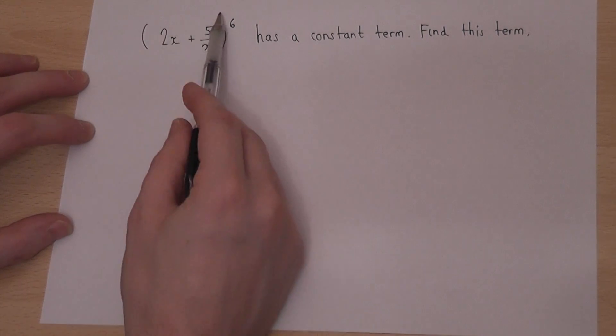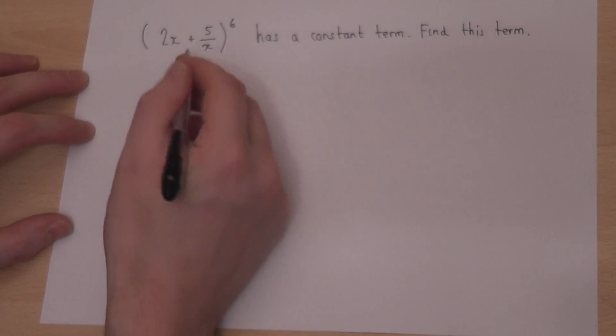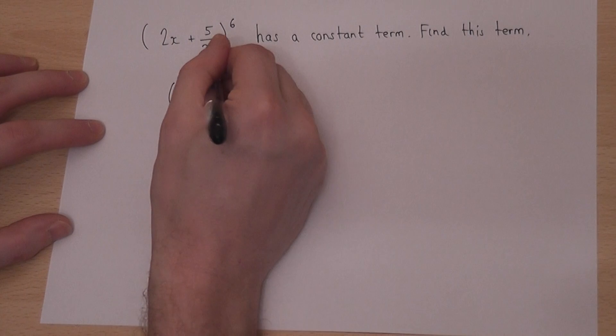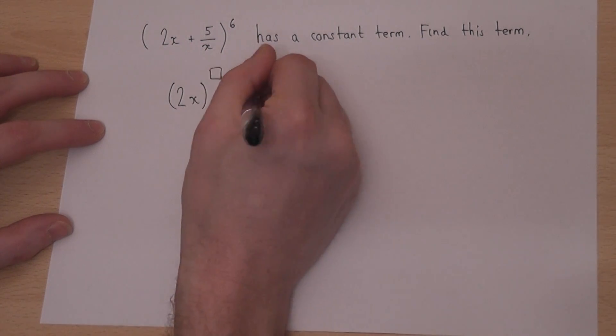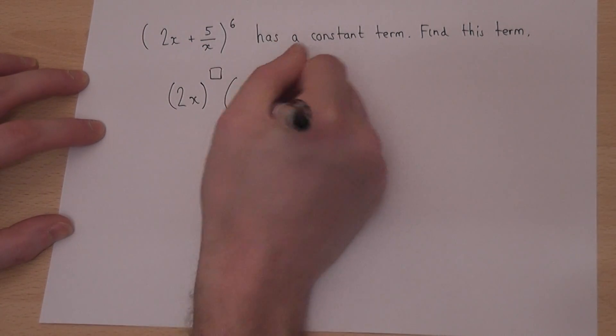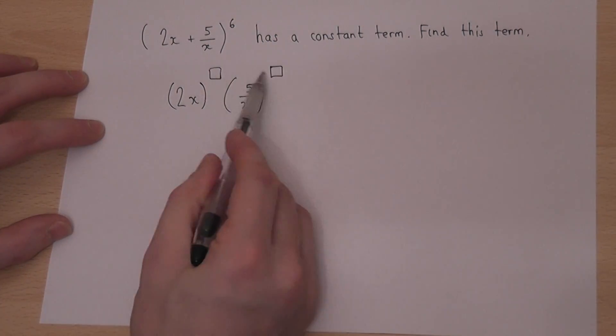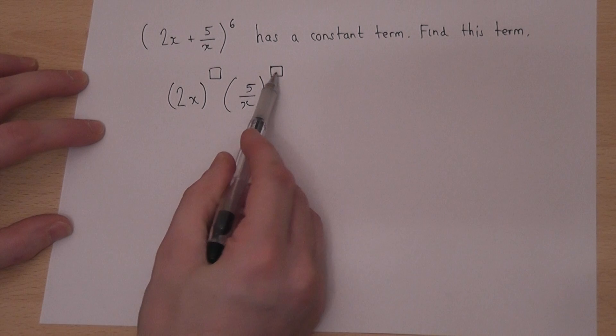Now, when we expand a bracket of this form, the terms can be given a certain way. We'll have 2x to the power of something, and we'll have 5 over x also to the power of something, and these two powers will add to make 6.